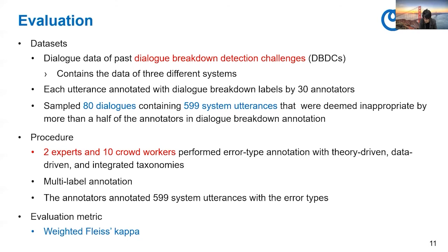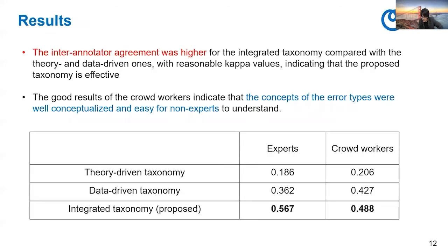The evaluation metric was weighted Fleiss' kappa. The results show that the value for the integrated taxonomy is quite high — higher than the previous taxonomies. The inter-annotator agreement was higher for the integrated taxonomy compared with the theory-driven and data-driven ones, with reasonable kappa values indicating that the proposed taxonomy is effective. The good results of the crowd workers indicate that the concepts of the error types were well-conceptualized and easy for non-experts to understand.